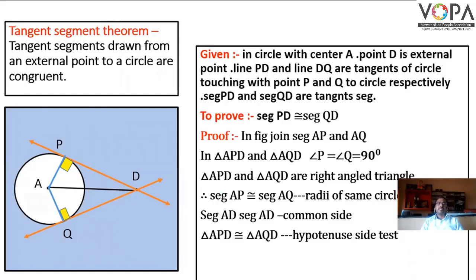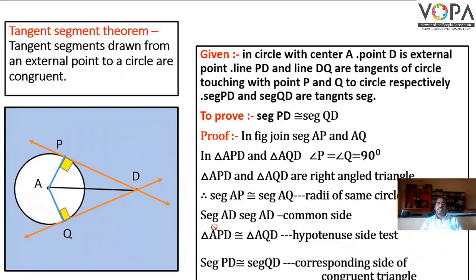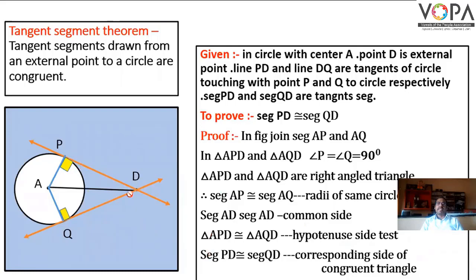Therefore, triangle APD is congruent to triangle AQD by the hypotenuse-side test. When two triangles are congruent, their corresponding sides are congruent. Hence, segment PD is congruent to segment QD as corresponding sides of congruent triangles. Hence, it is proved.